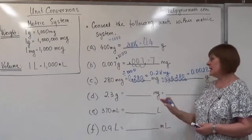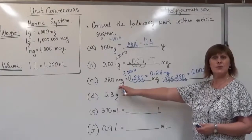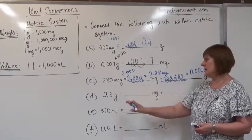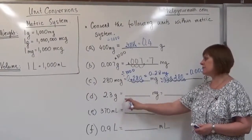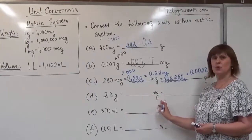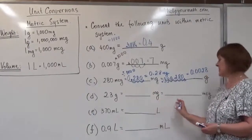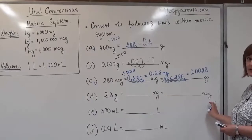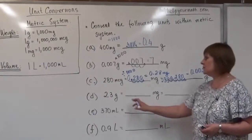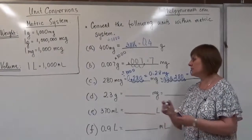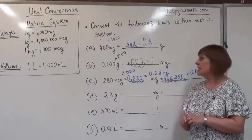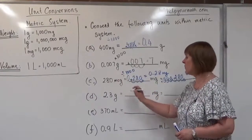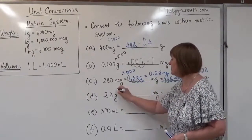In Example D, the problem converts in the opposite direction from Example C — from larger to smaller: milligram and then to even smaller microgram. To convert between gram and milligram, similar to Example B, we multiply by 1,000.